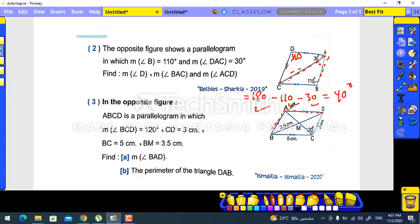If he says A, A is opposite to C, so it will be 120 degrees. The perimeter of the triangle DAB - he wants this triangle in red. This is 3.5 and this will be 3.5.